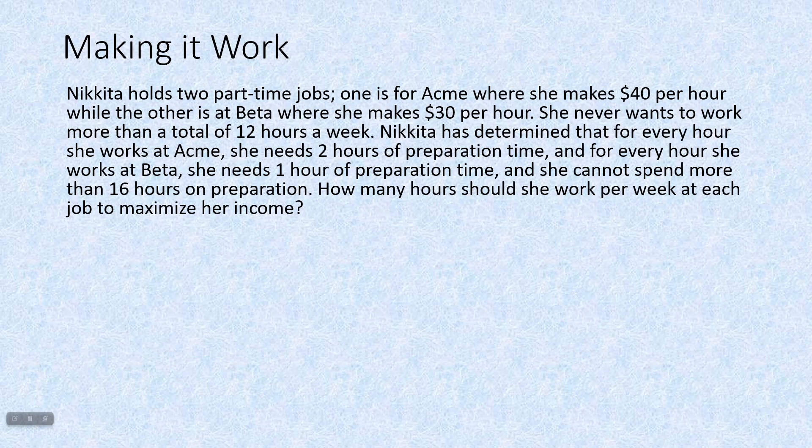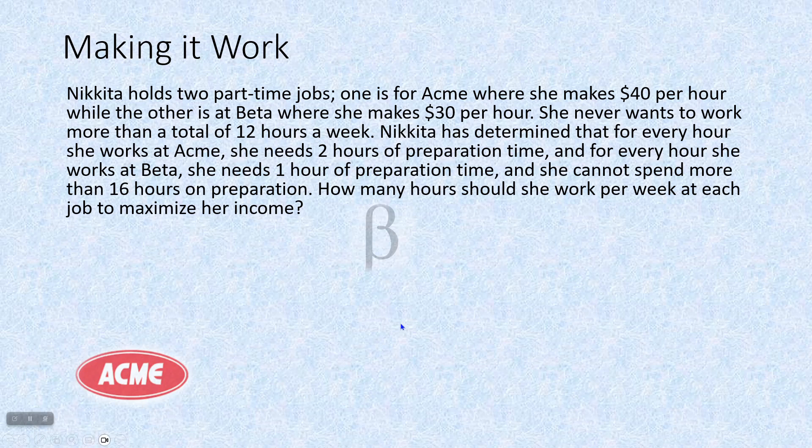Let's look at another example, and we're all working stiffs, so let's make this an unreasonable one. Nikita holds two part-time jobs. One is for Acme, where she makes $40 per hour, while the other is at Beta, where she makes $30 per hour. She never wants to work more than a total of 12 hours in a week, and really, who could blame her? Nikita has determined that for every hour she works at Acme, she needs two hours of preparation time, and for every hour she works at Beta, she needs one hour of preparation time, and she can't spend more than 16 hours on preparation. Nikita's got stuff going on. How many hours should she work per week at each job to maximize her income?